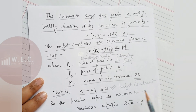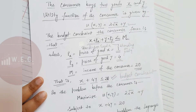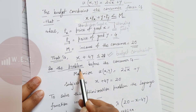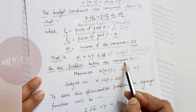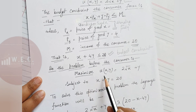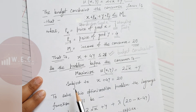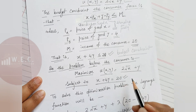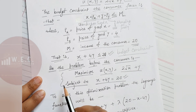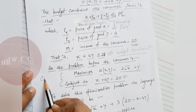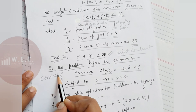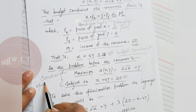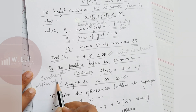The problem before the consumer is to maximize the utility function subject to the budget constraint. What maximum bundle of two goods can be consumed by the consumer to get utility maximized?